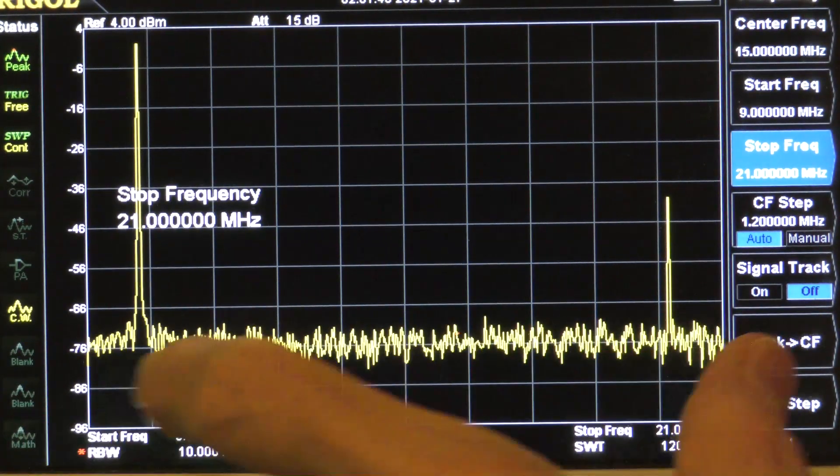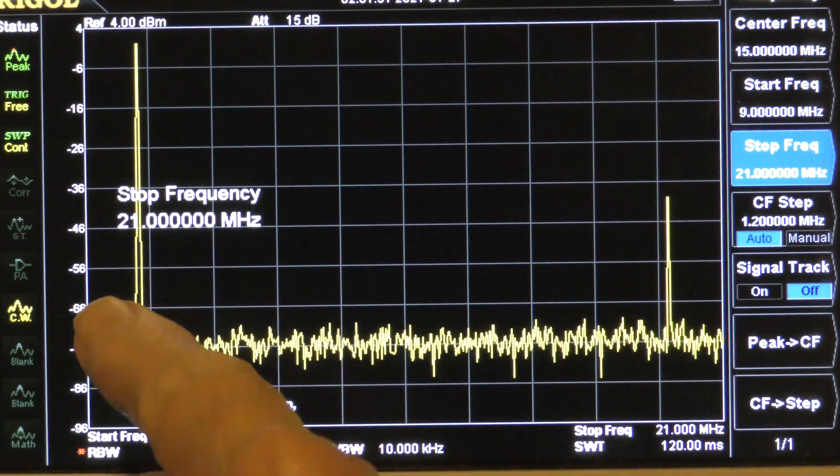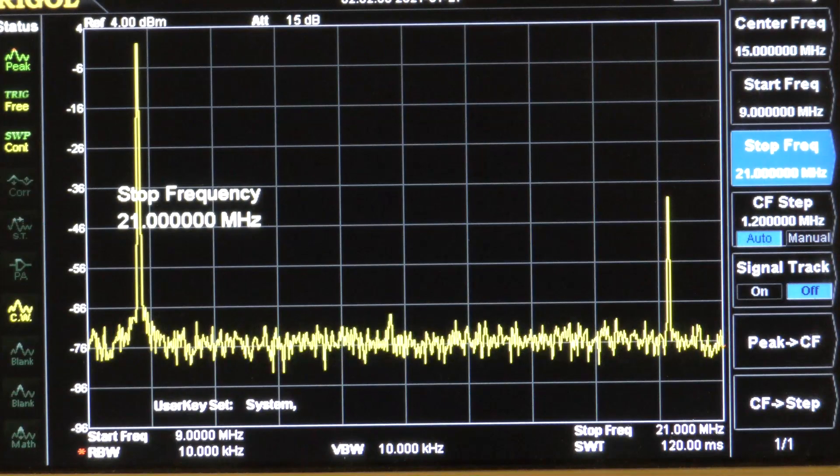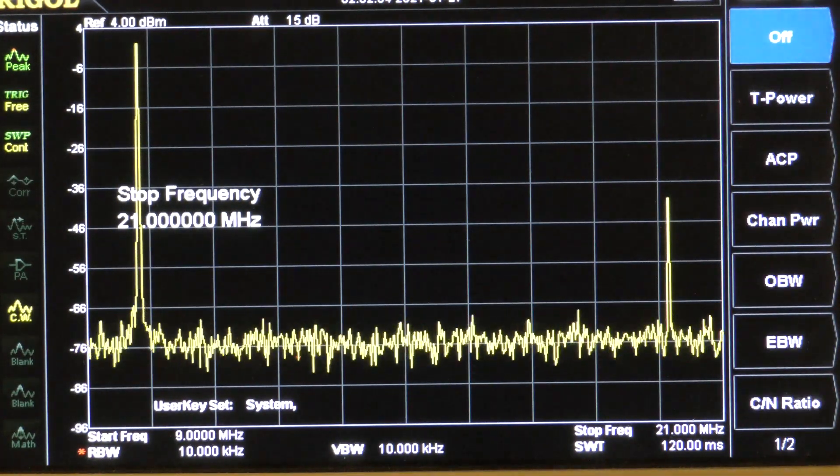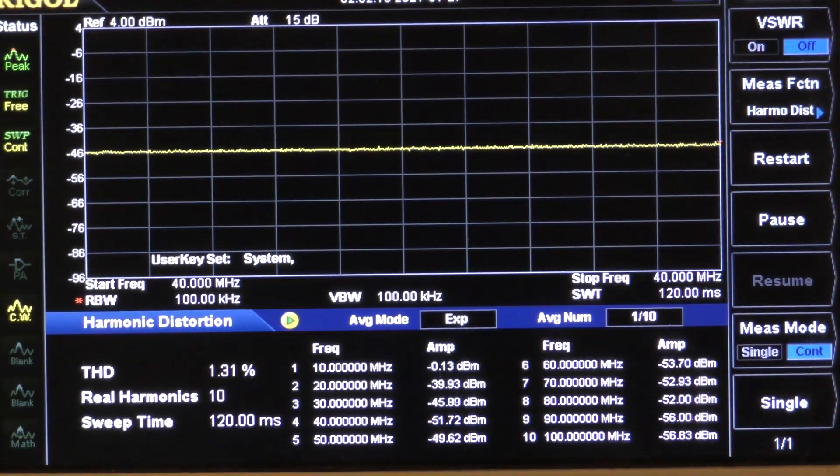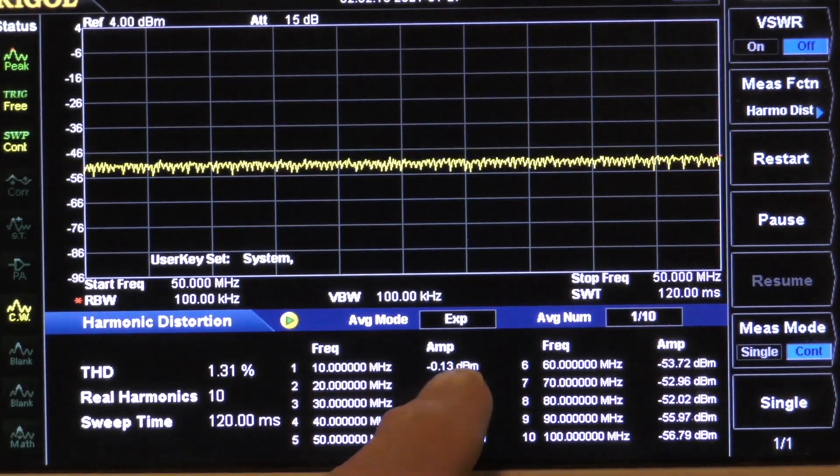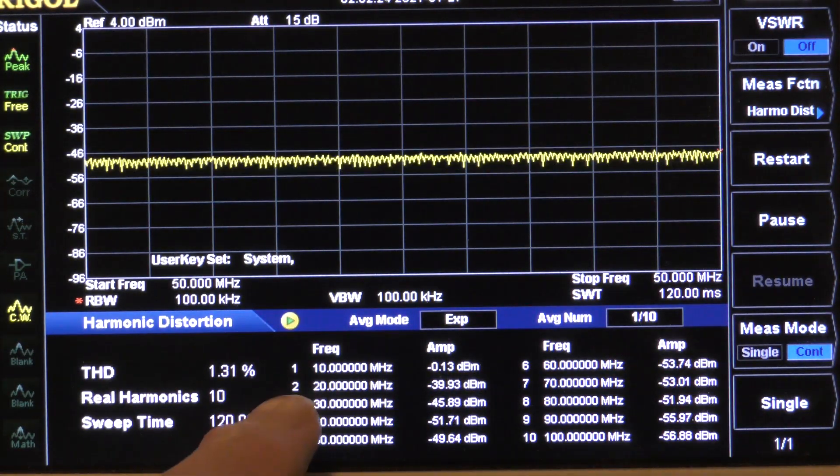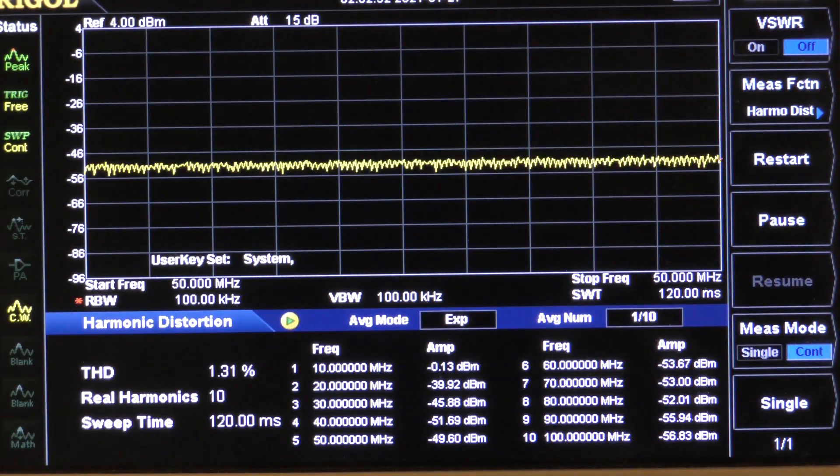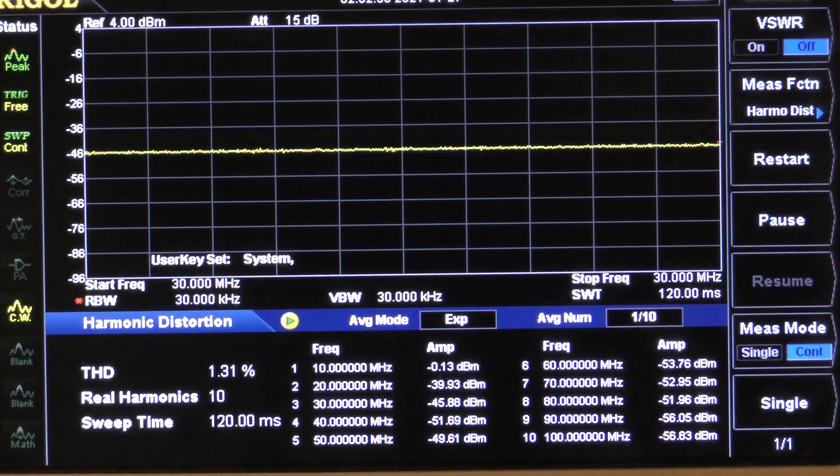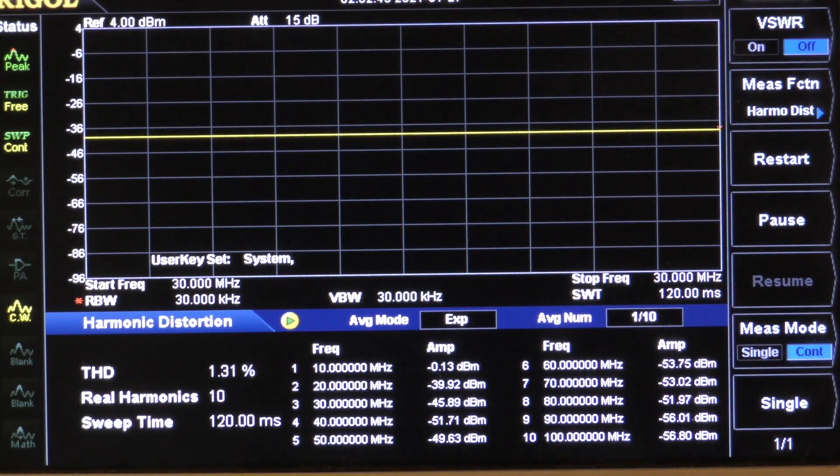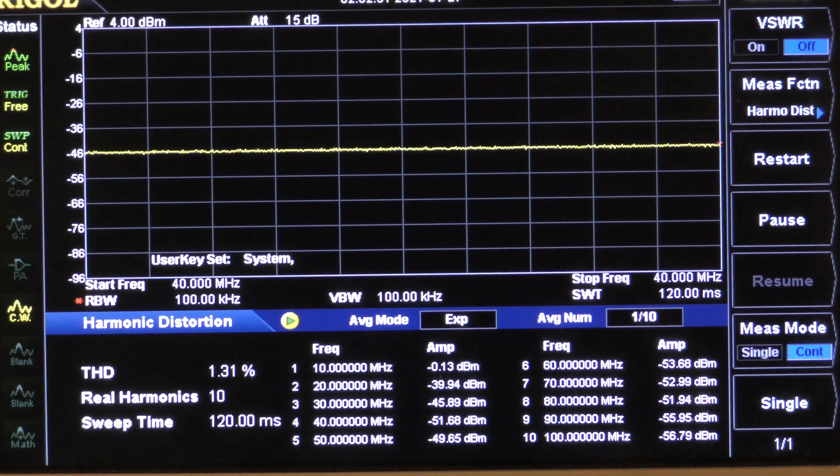Now, I've reset the span of the DSA-815. On the left is 10 MHz. This is 20 MHz. I'm going from 9 to 21 MHz. Now, we're going to go back into the measurement menu and pick harmonic distortion. Notice now the fundamental is at 10 MHz, and it's about minus 0.13 dBm. But the second harmonic is only down minus 40 dBm. And look at the harmonic distortion. It's up to 1.3%.